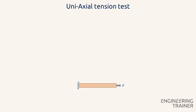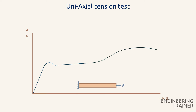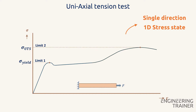For uniaxial stress tests — a simple test element with a force applied in the axial direction — we typically find a stress-strain curve from which we can deduce possible limits for the material stresses. The first limit is the yield stress, to ensure no plastic deformation of the pipe takes place. The second limit is the ultimate tensile strength, to ensure no rupture occurs. However, these limits are found for stresses in only one direction, from a one-dimensional stress state.